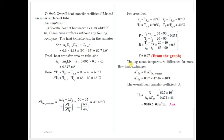The overall heat transfer coefficient Ui is equal to Q divided by Ai × delta TLM. Substituting all values, we get Ui = 3615 W/m²K. This confirms that the correction factor is required for heat exchangers other than parallel flow and counter flow types. The log mean temperature difference for shell and tube and cross flow heat exchangers must be corrected using factor F.